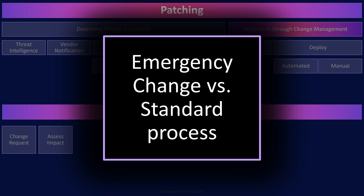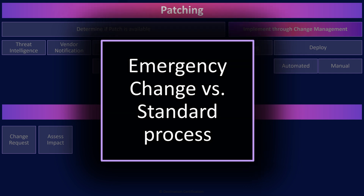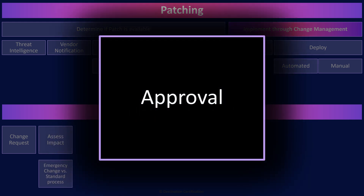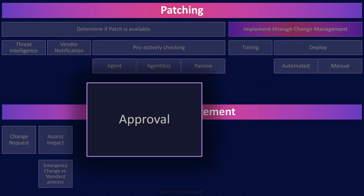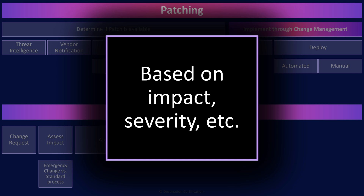The impact assessment determines what degree of approvals are required, what level of testing and validation, and who needs to be notified. The change management process needs to be flexible to address different types of changes. Ideally, we also want a flexible approval process: for minor changes, auto-approval may be allowed; at the other end of the spectrum, changes may require multiple levels of approval from various stakeholders across the organization, with everything signed in triplicate. What drives these different approval requirements is the impact on stakeholders, the level of effort required, whether it's an emergency, etc.